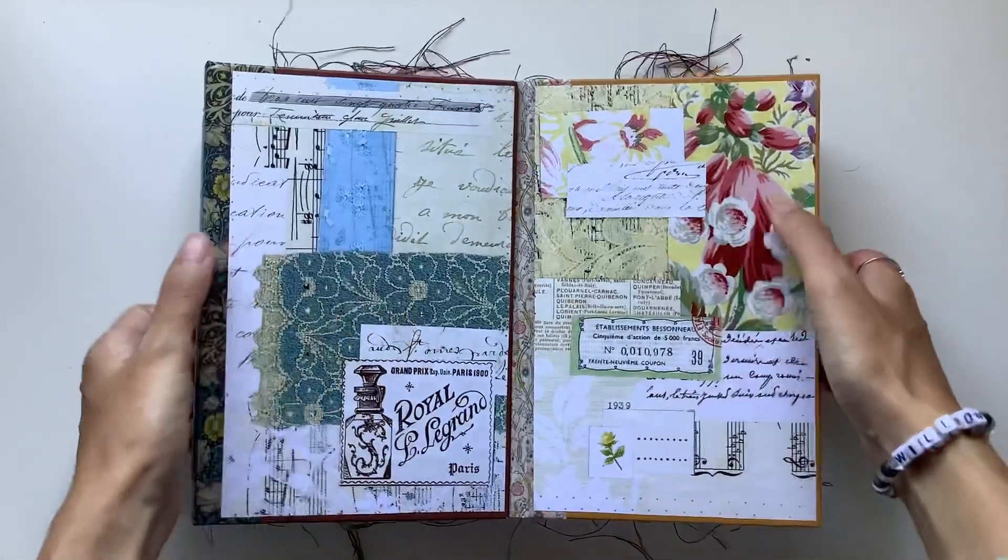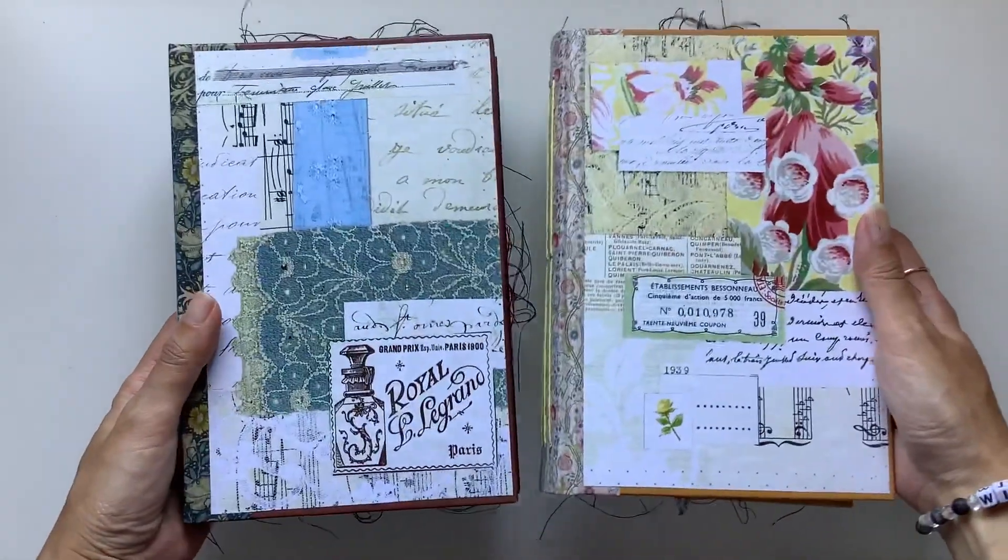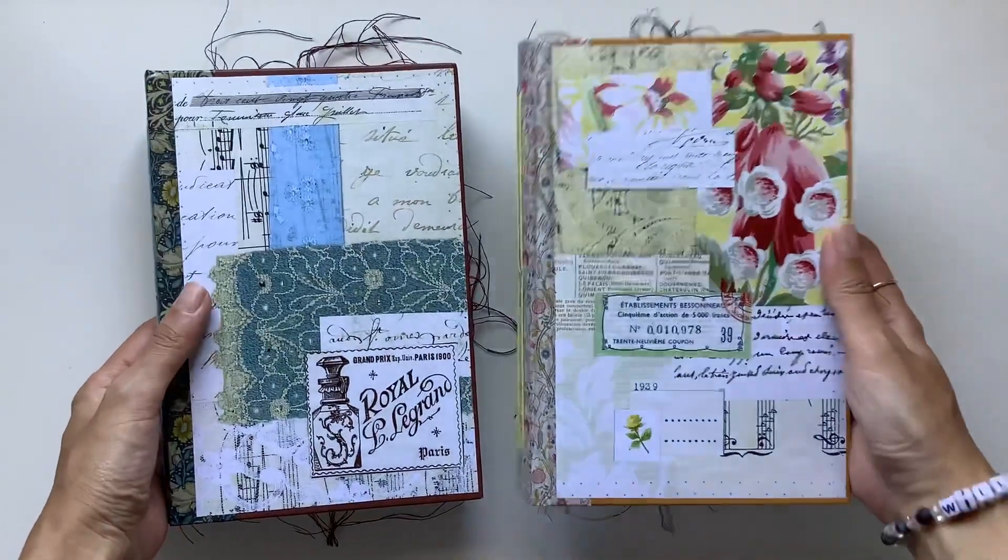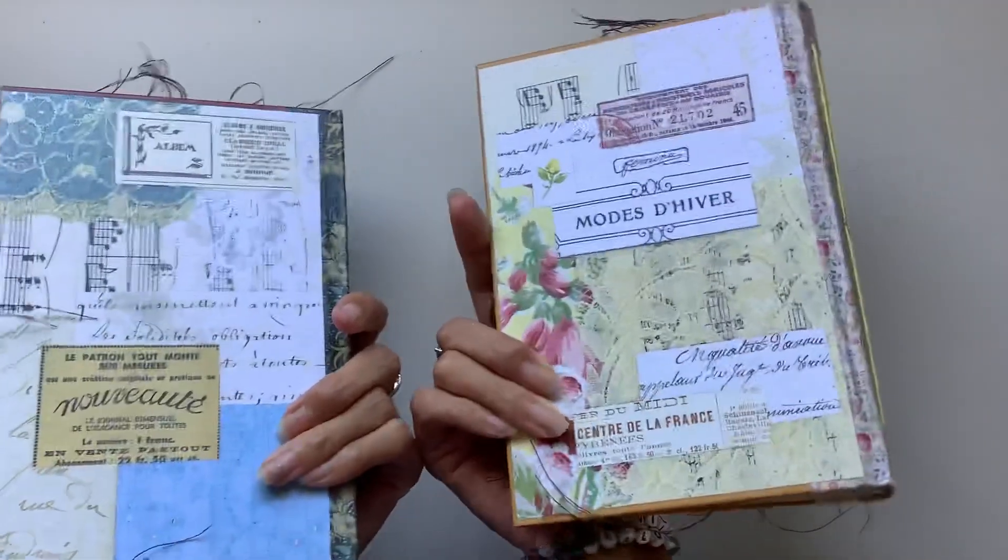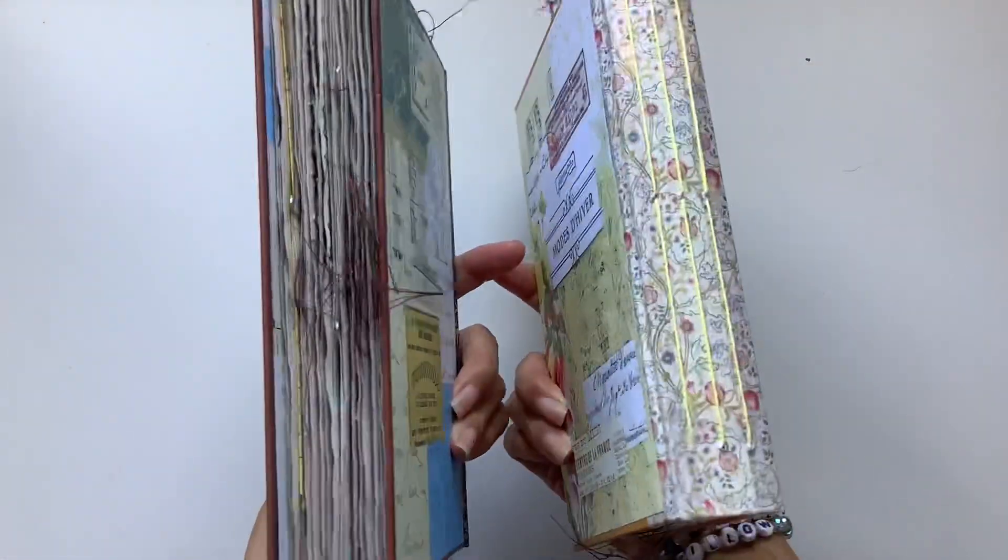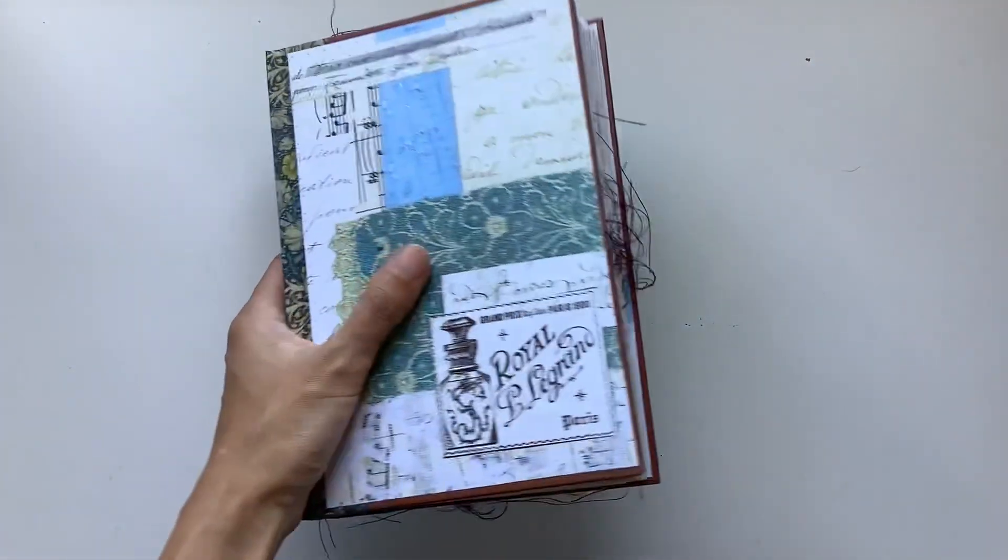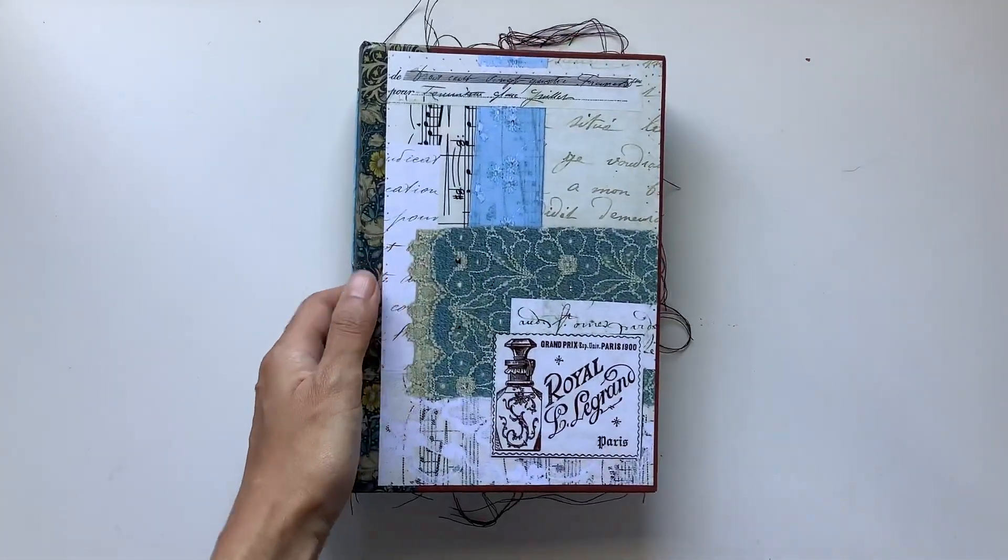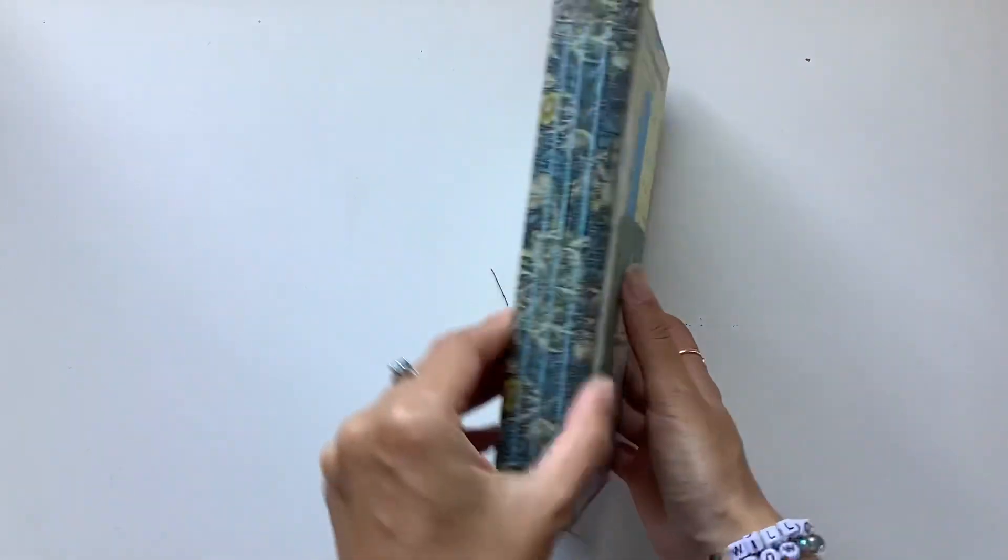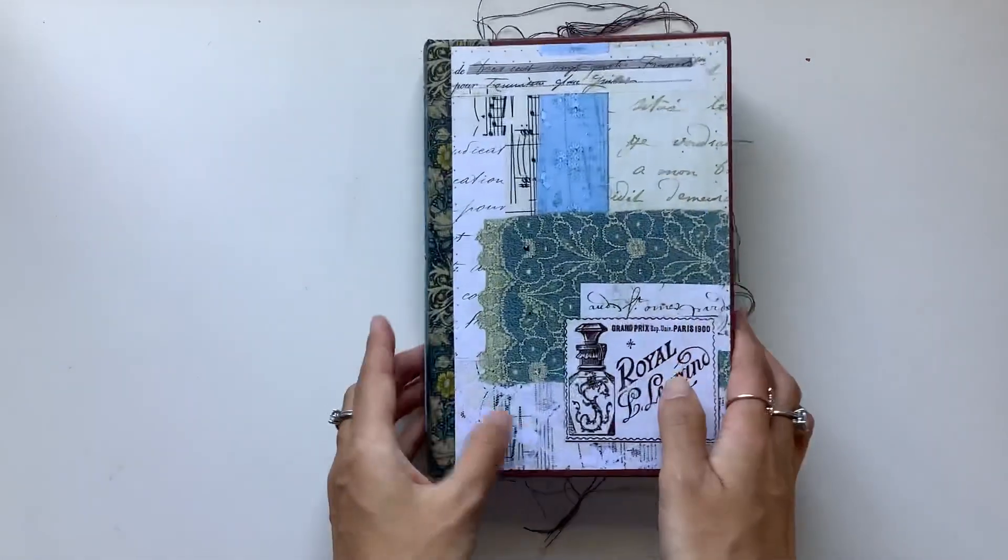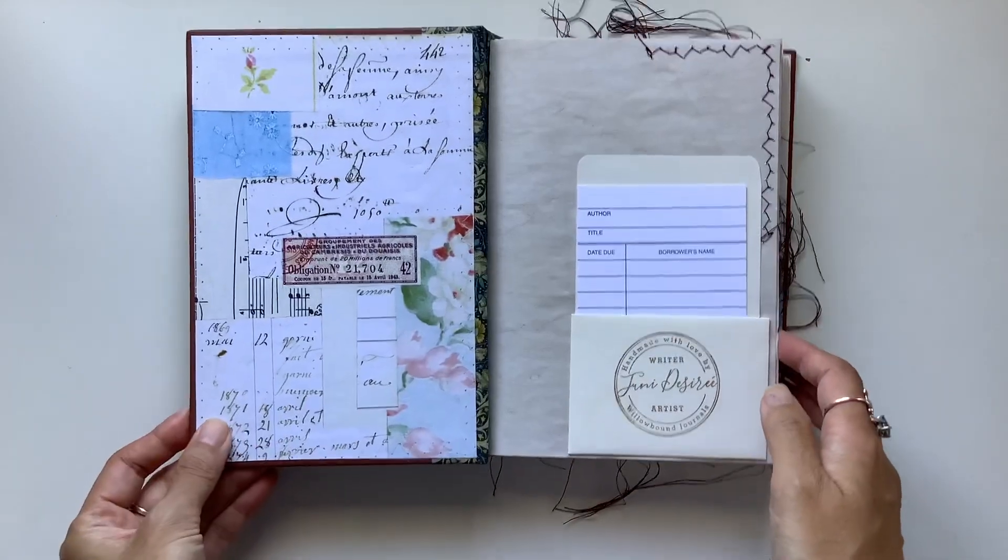So excited to share with you these two new journals, my Collage Journals Vintage French Themed. We've got a yellow one here and a blue themed one over there. If you look at the covers, they both have three signatures each. This one with yellow binding and this one with the blue binding, like that. The washi tape comes from Washi Wednesday. And let's do a flip through of this one first.